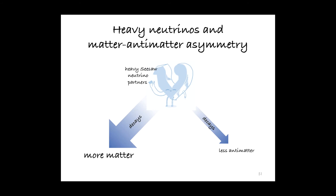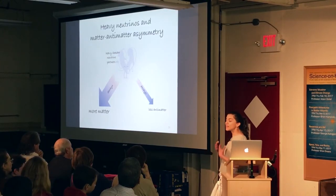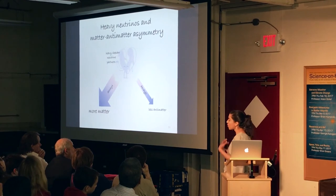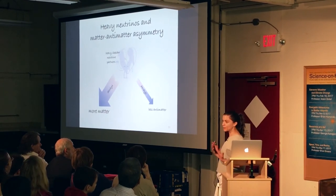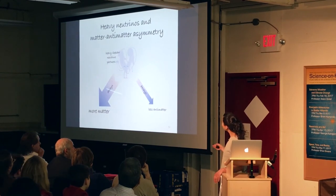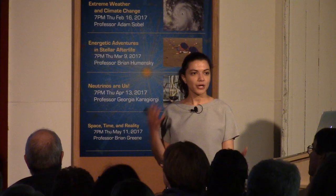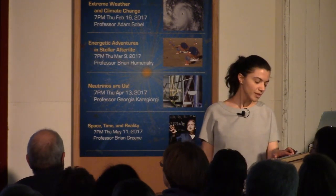The reason this heavy seesaw neutrino can generate a matter-antimatter asymmetry is that the seesaw model predicts that these heavy superpartners are actually their own antiparticles. That makes them special, because no other fundamental particle has this weird property. And it makes them special in a way that allows them to violate matter and antimatter symmetries. So a big question then is whether light neutrinos show any signs of this symmetry violation — specifically, whether neutrinos and anti-neutrinos differ in their behavior.